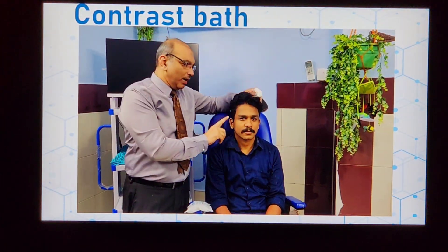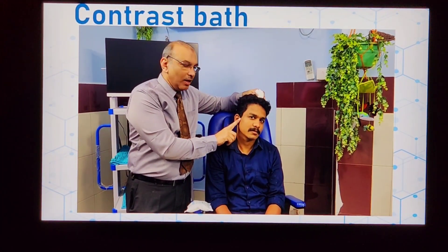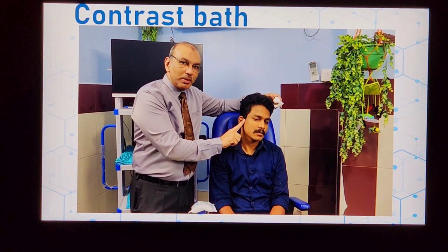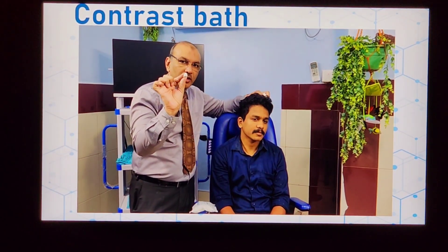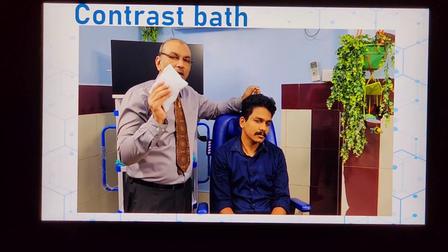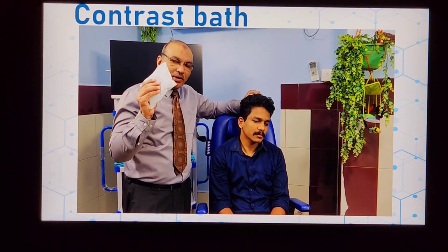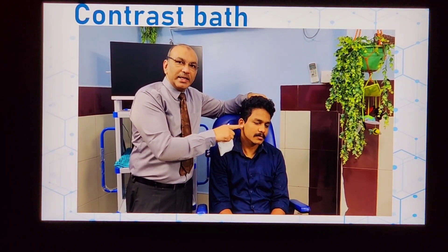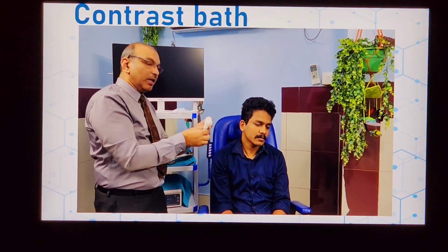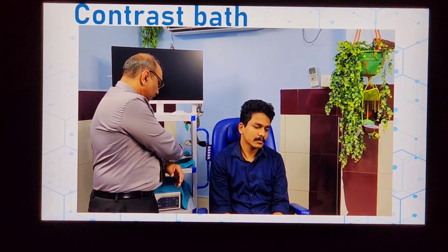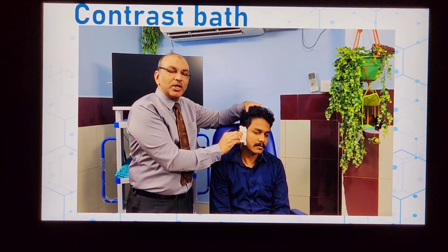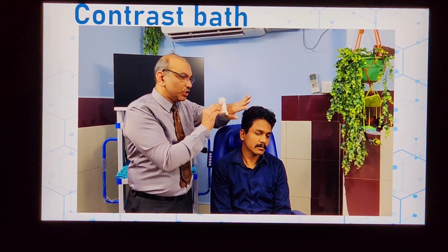Now for the contrast bath demonstration. This patient has a right temporomandibular joint dysfunction. First, take a small dry cotton piece and place it in the ear so that water does not go inside. Then take an ice gel or ice pack — which you can get at a pharmacy — and place it over the pre-auricular region over the temporomandibular joint for one minute, followed by application of warmth for 10 seconds only. This is repeated at least 5 to 10 times.